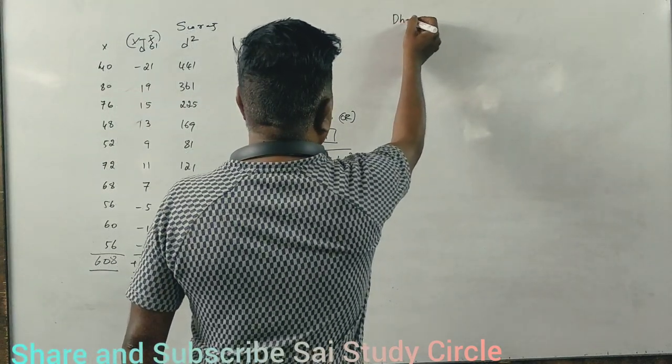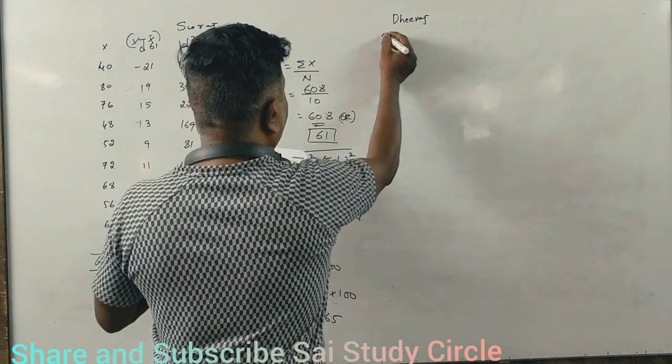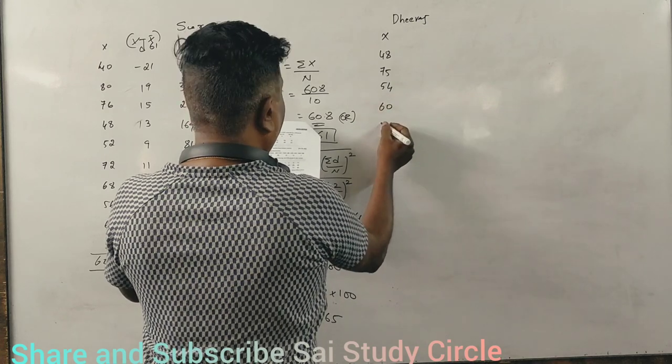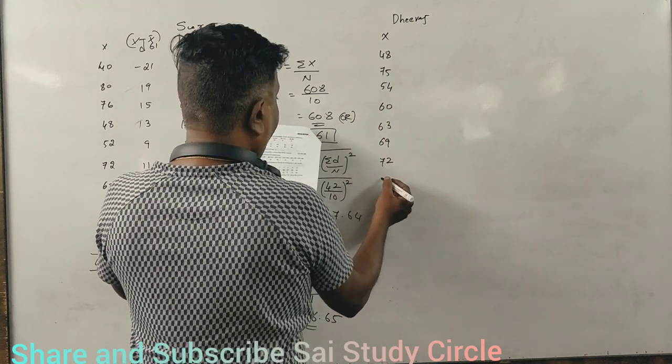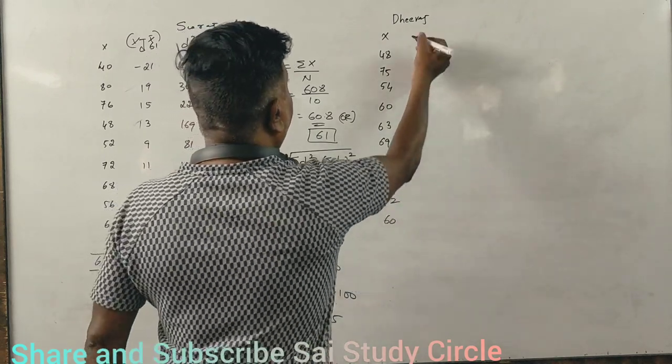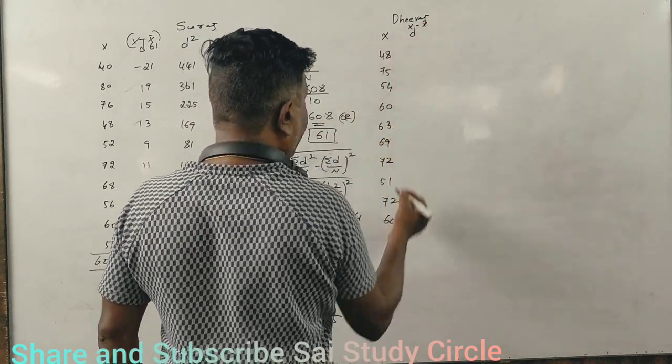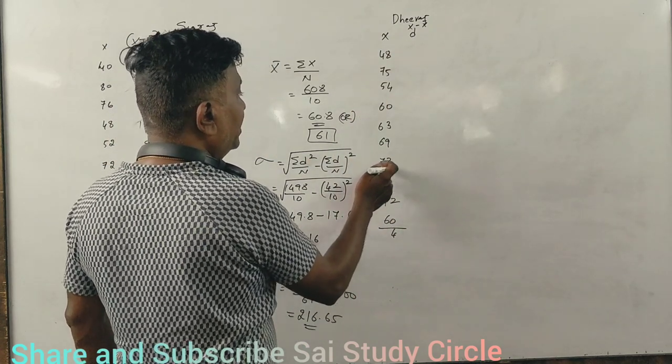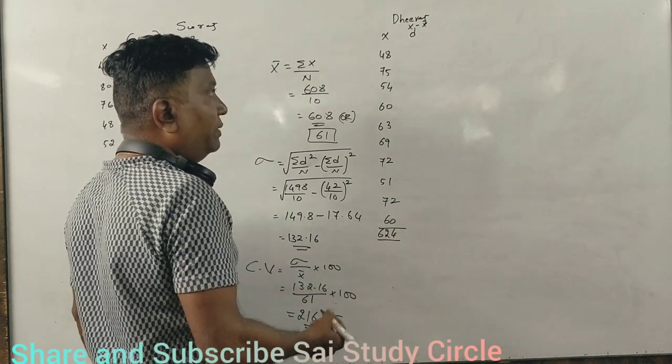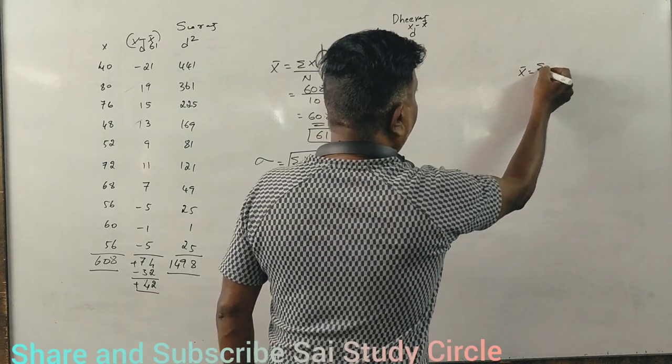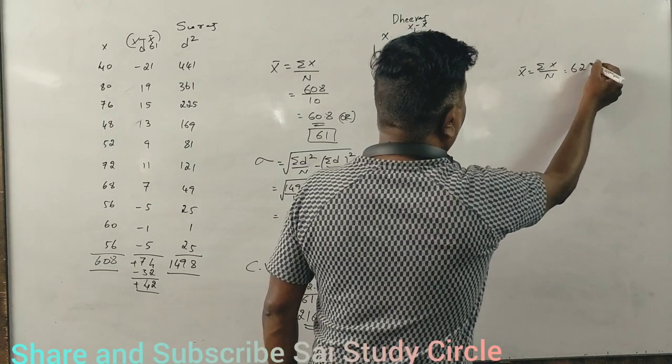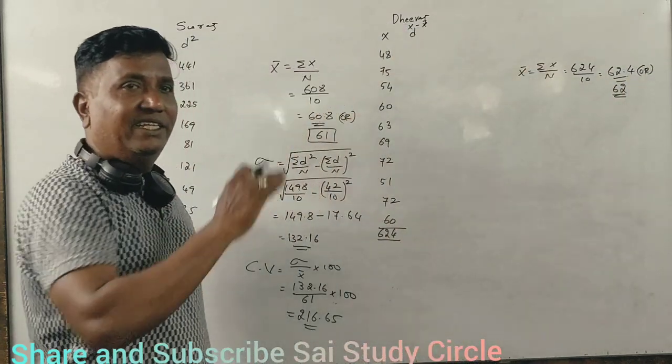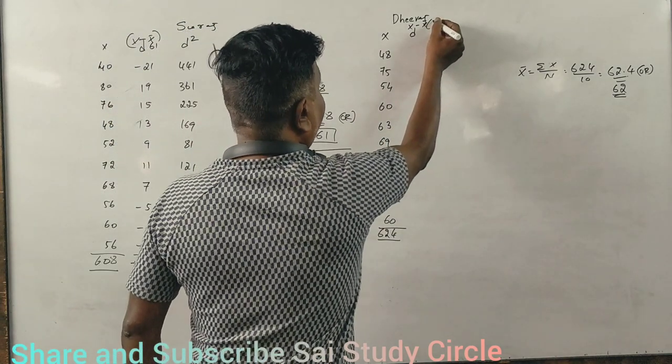Now Deeraj's score: 48, 75, 54, 60, 63, 69, 72, 51, 72, 60. Now x is equal to summation x divided by n. 624 divided by 10 is 62.4. This is 62 or 63.